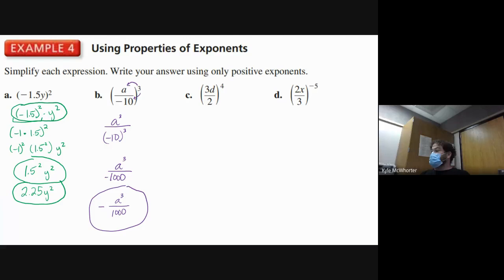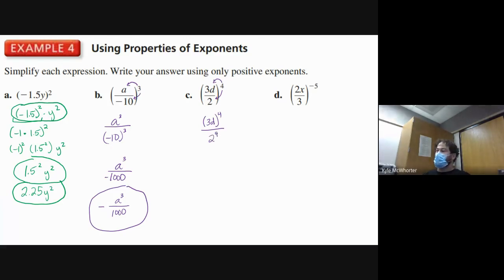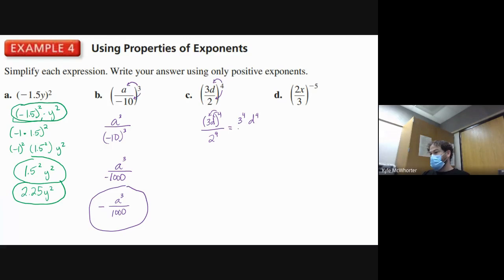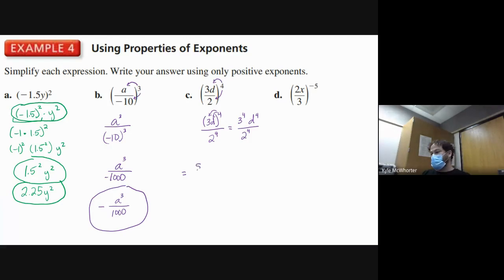Part C has a combination — a quotient where the top is a product. The fourth power comes into both top and bottom. The top is a product, so the fourth power comes into each factor: three to the fourth times d to the fourth over two to the fourth. Three to the fourth is 81, and two to the fourth is 16, giving 81 d to the fourth over 16.